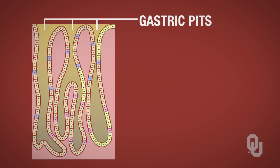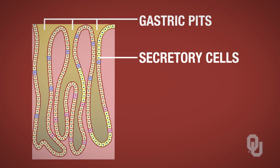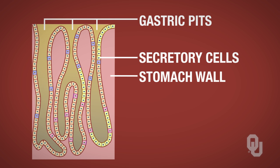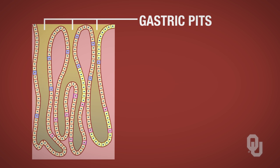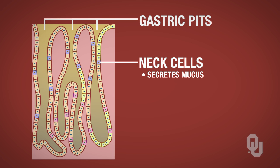Let's zoom in on the gastric pits. The gastric pits contain secretory cells — based on the name, you can guess they secrete something. The gastric pits extend down into the wall of the stomach, and there are many different types of cells associated with them. The mucus neck cells, shown in blue, secrete mucus, which helps protect the lining of the stomach.